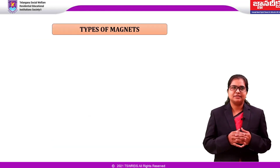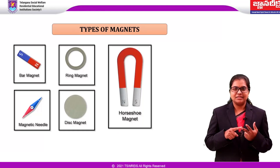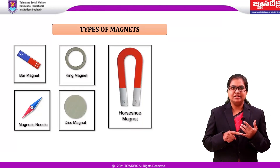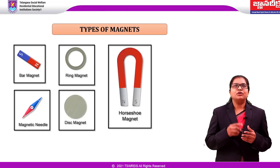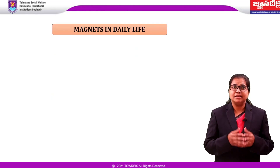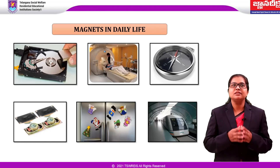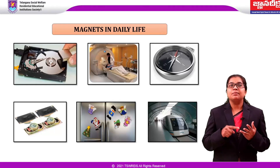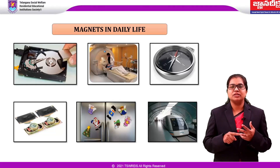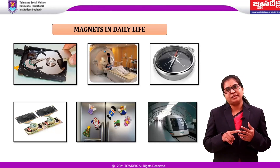What are the types of magnets? Bar magnet, ring magnet, disc magnet, magnetic needle, horseshoe magnet, etc. What are the applications of magnets in our daily life? We can see magnetic storage devices in computers, in the medical field MRI scanning, compass which is used for navigation, location and direction, in speakers, in fridge doors, and maglev trains which are very high speed trains.